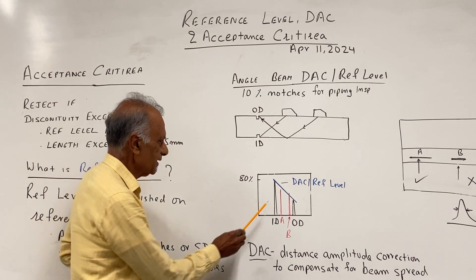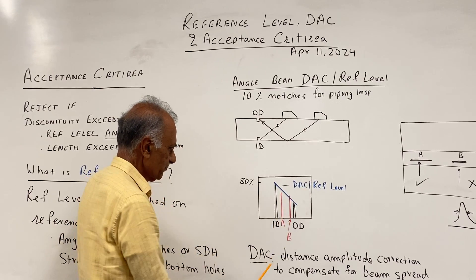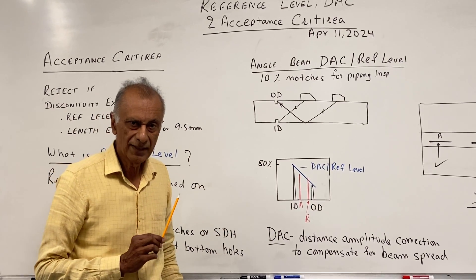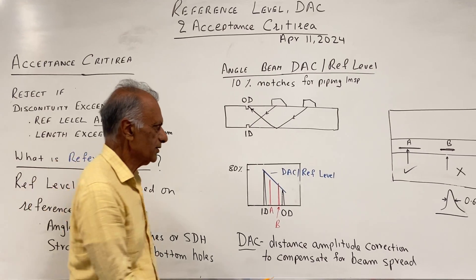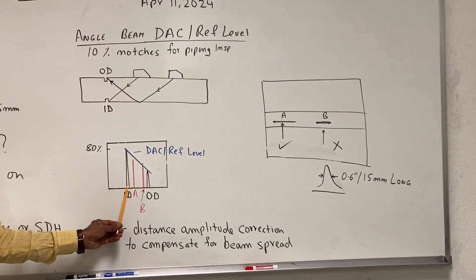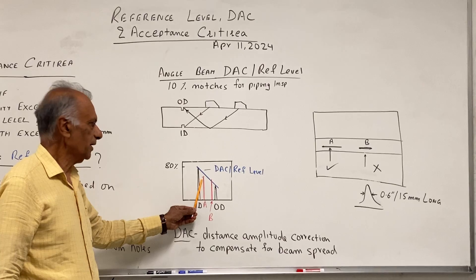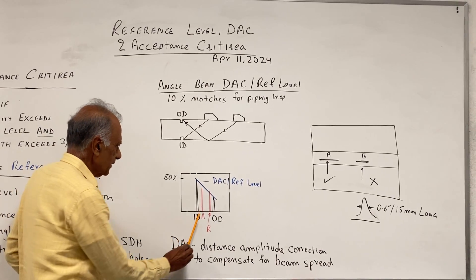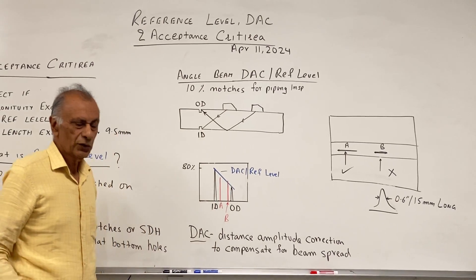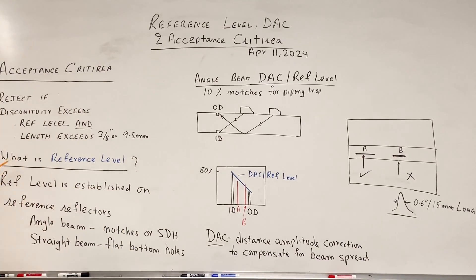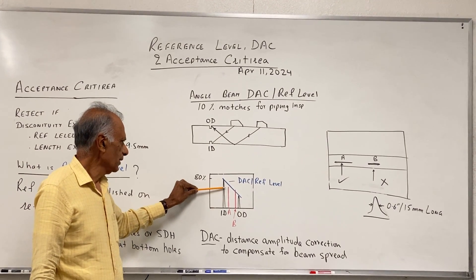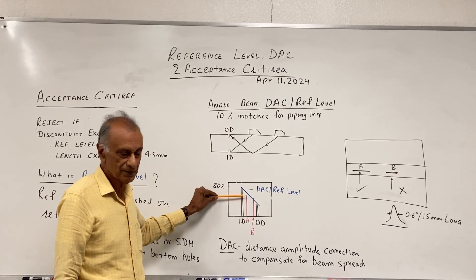So this is our reference level — the DAC on the reference reflectors. After we get the DAC curve, we start doing the inspection. Here is an example of a weld where we find two discontinuities: discontinuity A and discontinuity B. Discontinuity A produces a signal which is 65% of the full screen height, but this signal is below the DAC curve, below the reference level. The acceptance criteria says that the discontinuity has to exceed the reference level, so this 65% signal from A will be accepted because it is below the reference level.